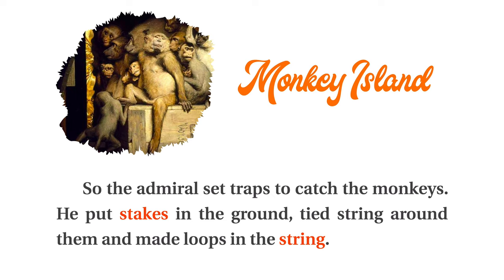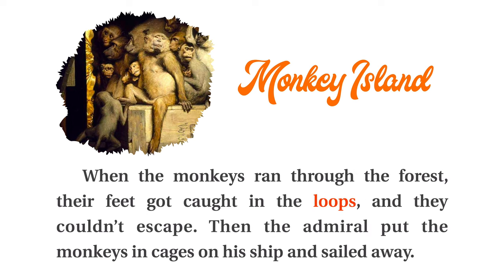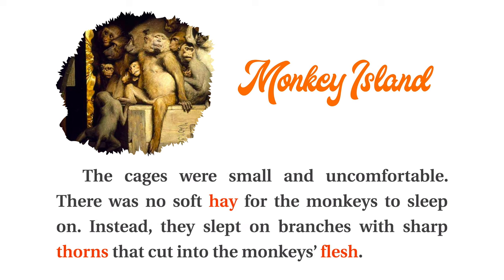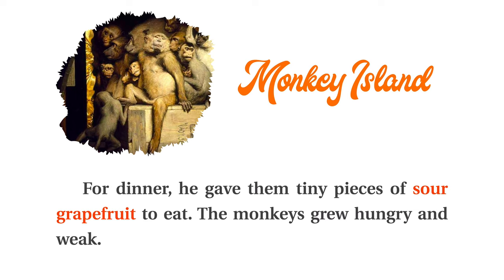He put stakes in the ground, tied string around them, and made loops in the string. When the monkeys ran through the forest, their feet got caught in the loops and they couldn't escape. Then the admiral put the monkeys in cages on his ship and sailed away. The cages were small and uncomfortable. There was no soft hay for the monkeys to sleep on. Instead, they slept on branches with sharp thorns that cut into the monkeys' flesh. For dinner, he gave them tiny pieces of sour grapefruit to eat. The monkeys grew hungry and weak.